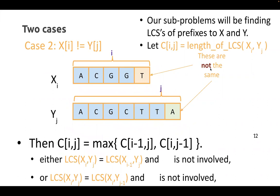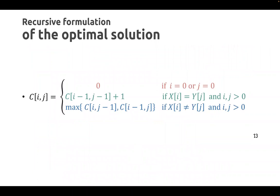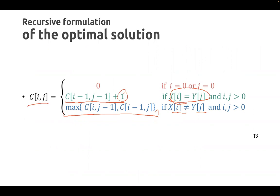So these are our two sub-cases, and that gives us a recursive formulation. C(i,j) is: if the two characters are equal, it's 1 + C(i-1, j-1); if they're not equal, it's max(C(i-1, j), C(i, j-1)). Our base cases are: if i is zero or j is zero, meaning one of our strings is the empty string, then the longest common subsequence is obviously zero.